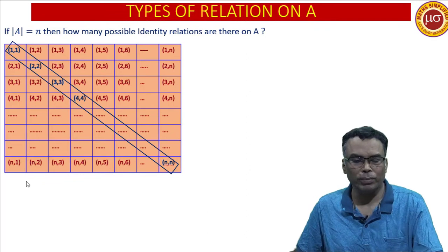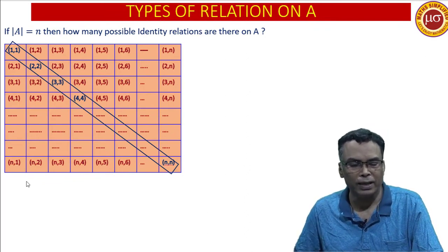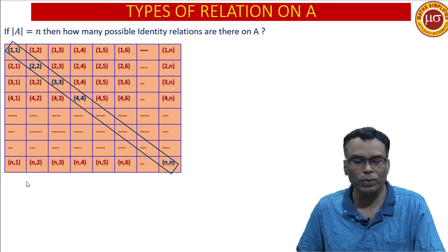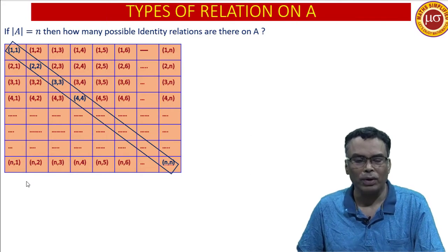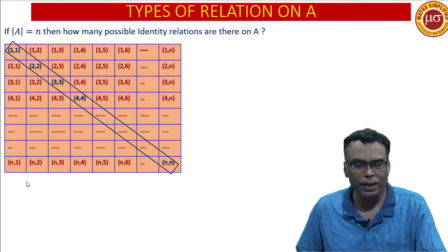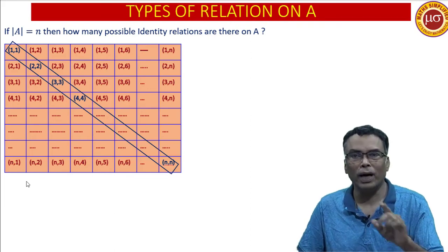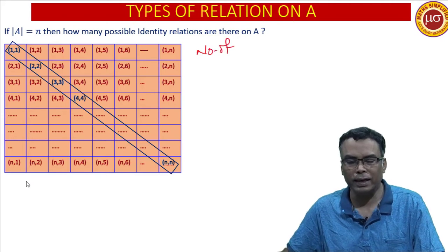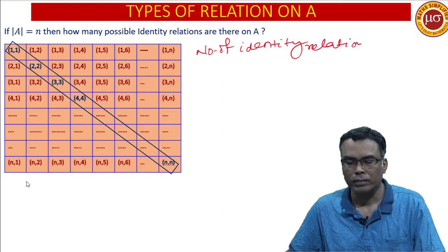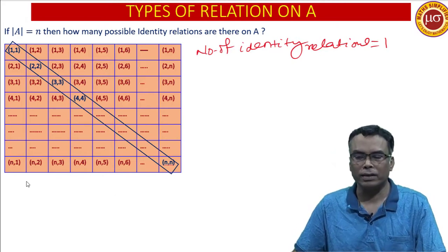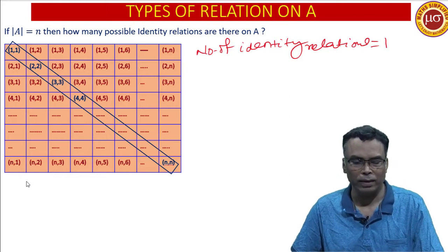For an identity relation, every element must be related to itself only. So in an identity relation, A is related with A, B is related with B, C is related with C — or 1,1 and 2,2 and 3,3 and 4,4 like this. Therefore, the number of identity relations we shall get is only one. On a set, the number of identity relations is always one.